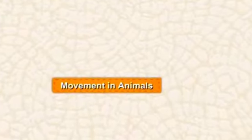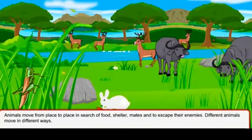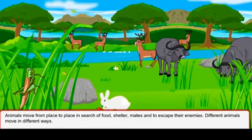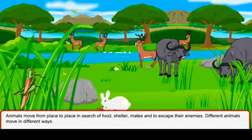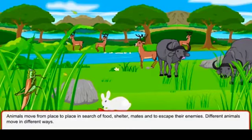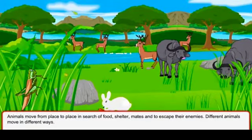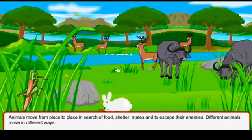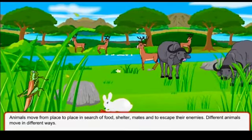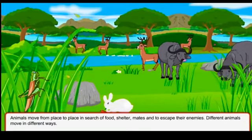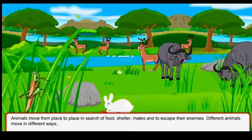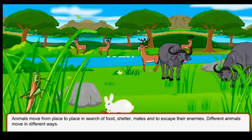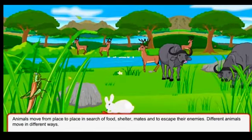Bismillahirrahmanirrahim, Assalamu Alaikum and welcome to science class. Today the topic that we are going to start is movements in animals. Animals move from place to place in search of food, shelter, mates, and to escape their enemies. Yahaan yeh bataya gaya hai ke animals ek jaga se doosari jaga move kyun karte hain - khane ki talash mein, shelter ki talash mein, apni nasl ko badhaane ke liye, aur apne dushmano se bachne ke liye.